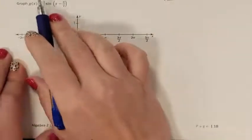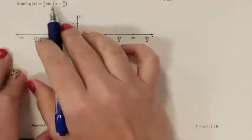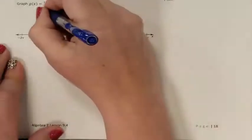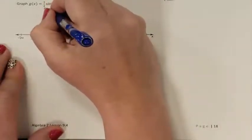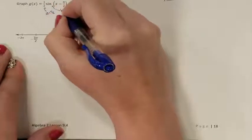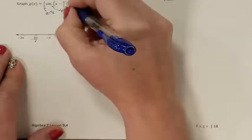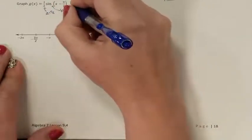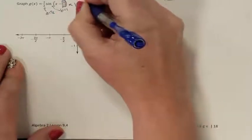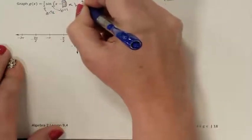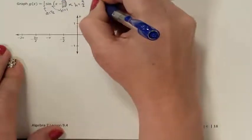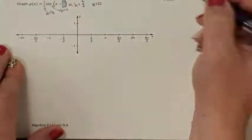Now let's graph g of x equals one-half sine of (x minus pi halves). First I need to identify my a — my a is one-half. There is nothing written out front, so I know my b is 1. Inside the parentheses is my h — I'm subtracting pi halves, so my h is pi halves. There is nothing added or subtracted on the outside, so my k is 0.